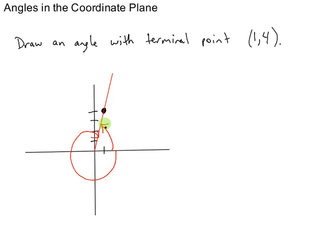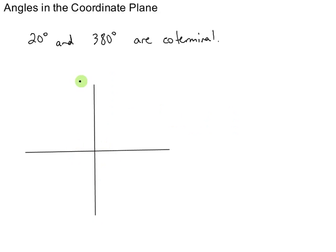Angles that have the same terminal side are called coterminal. Coterminal angles. They end at the same place. Let's see some examples of that. 20 degrees and 380 degrees are coterminal. If I draw 20 degrees, I'm going to rotate 20 degrees off of my x-axis, and I get this terminal side.